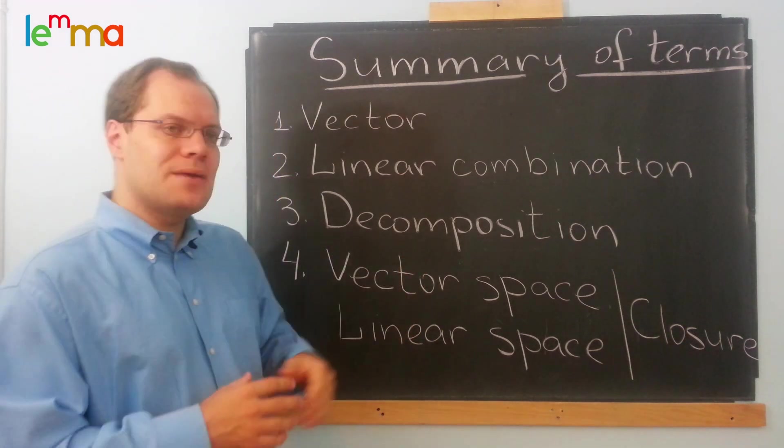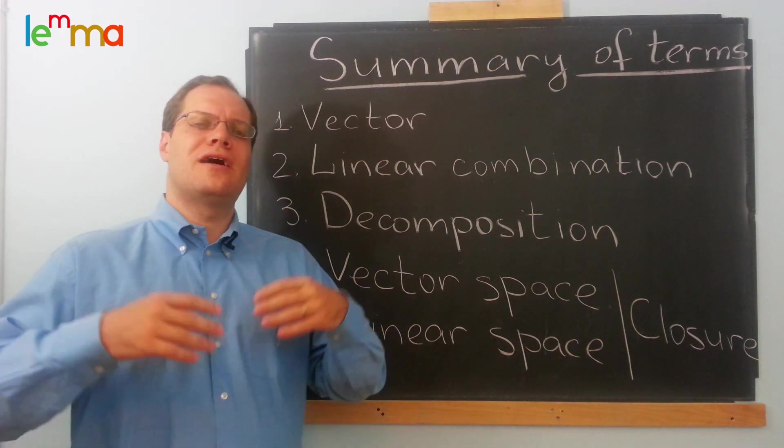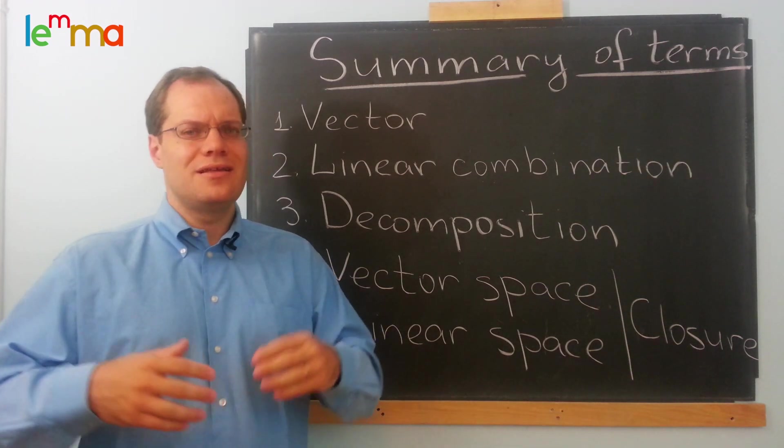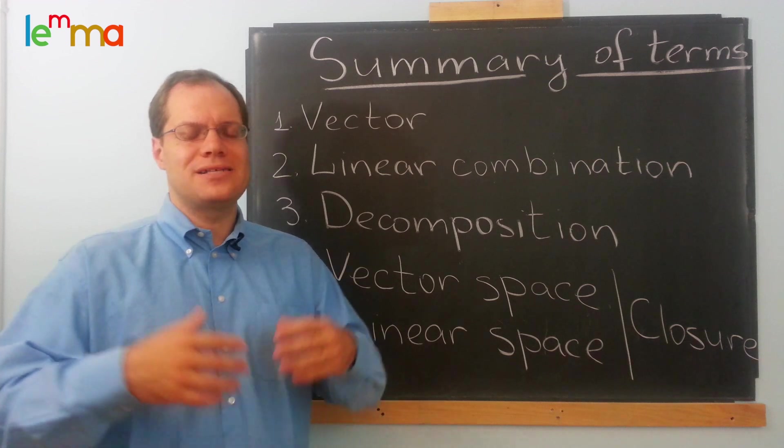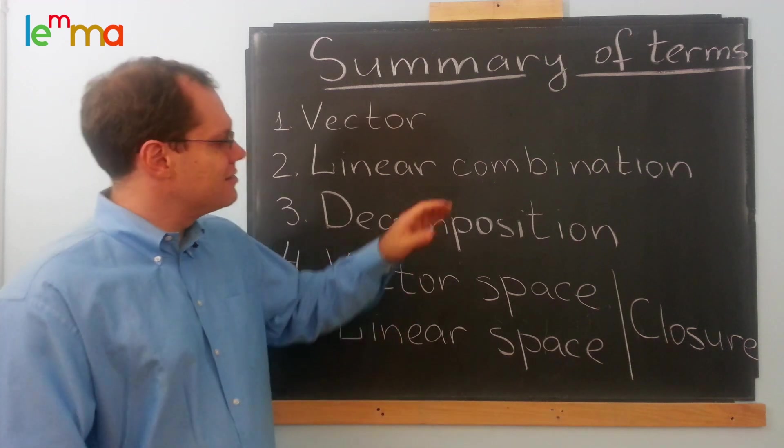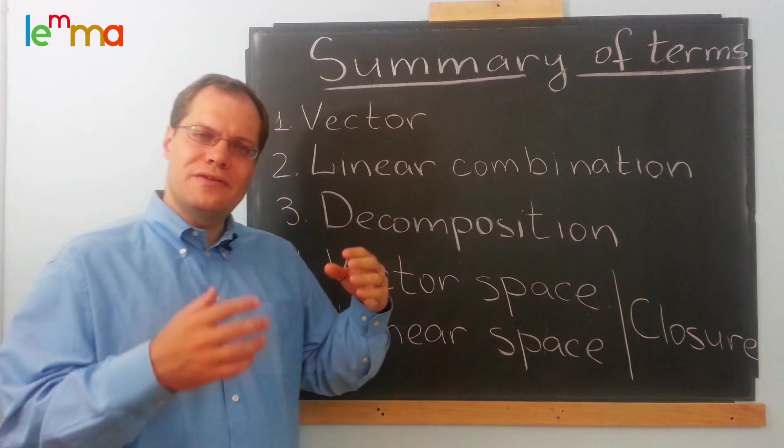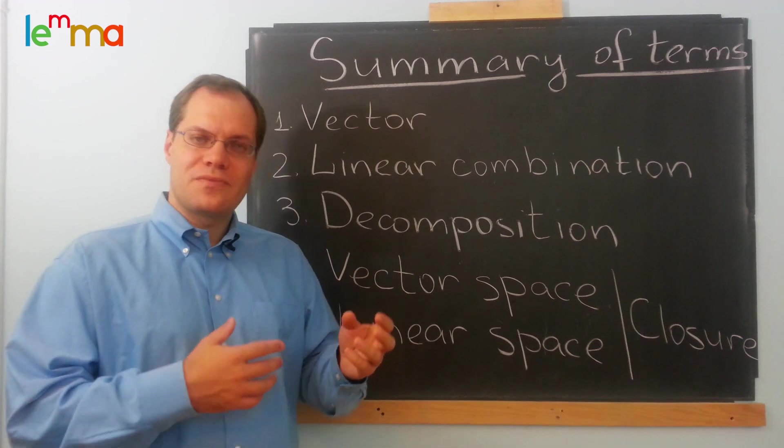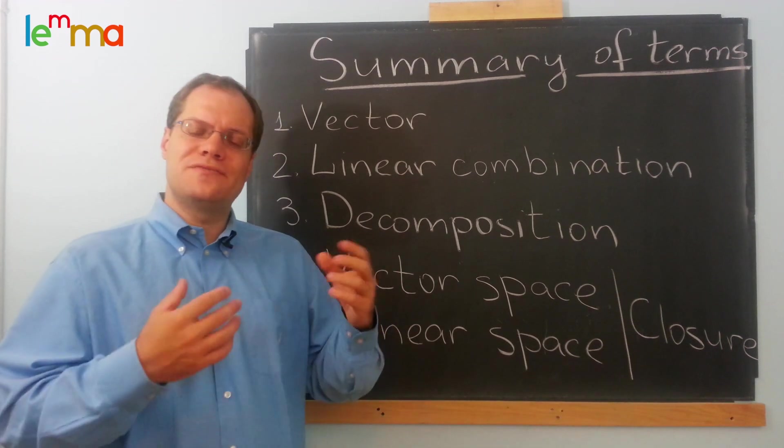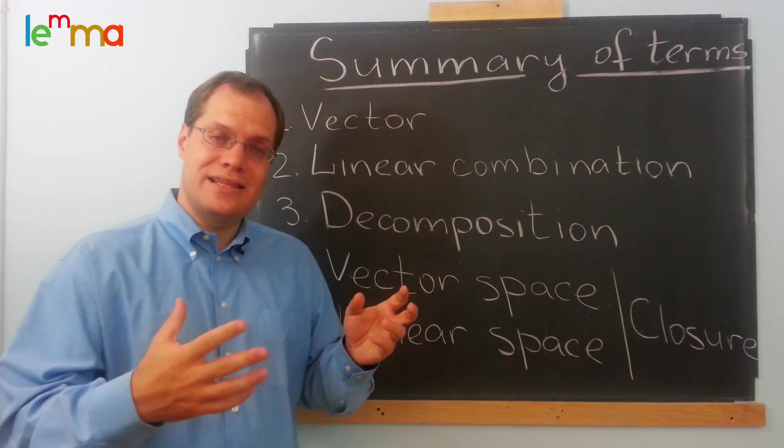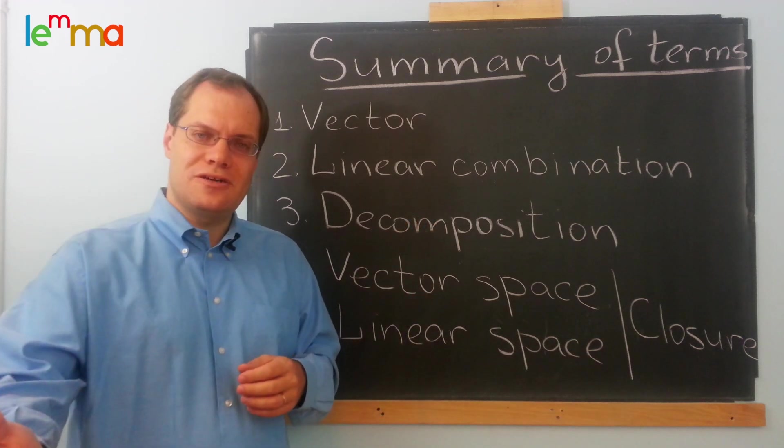Earlier on we mentioned decomposition, and of course we're going to talk a lot more about decomposition, and when it's possible, and when it's not possible, and so forth. But in the linear combination, you're given a bunch of vectors and as many numbers, and you multiply those vectors by the numbers, add them together, and produce the result.